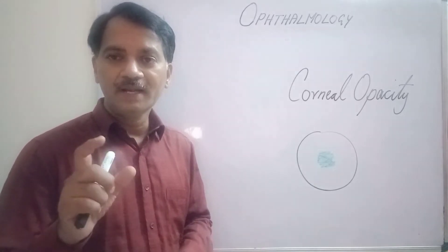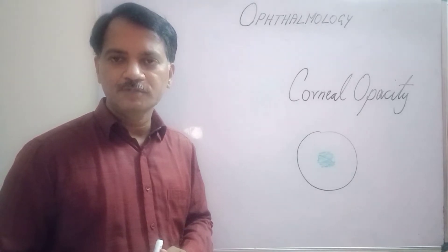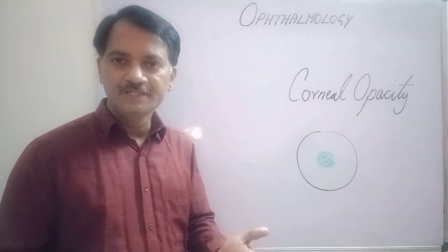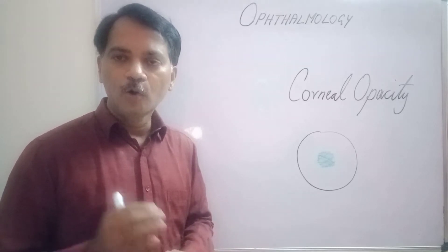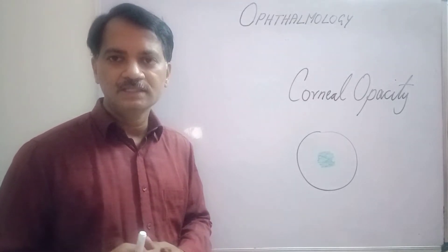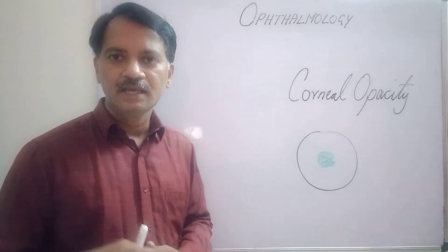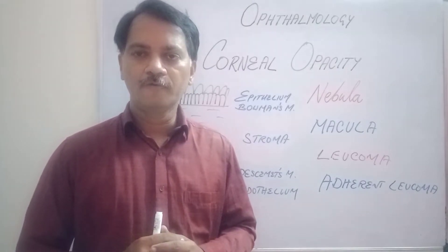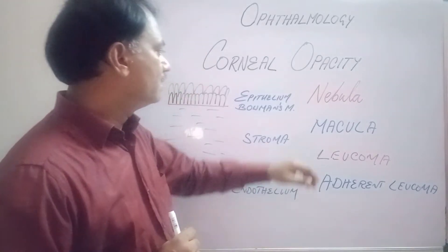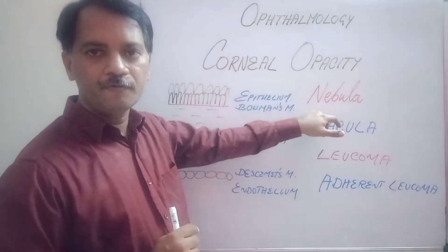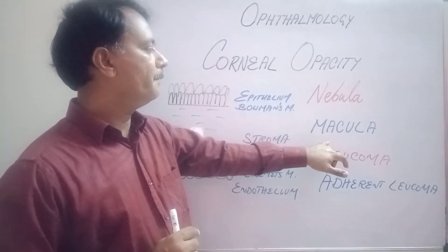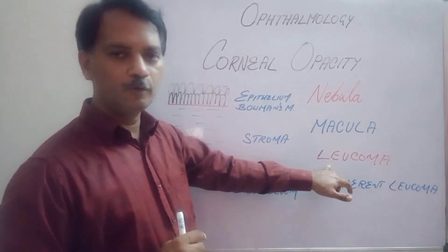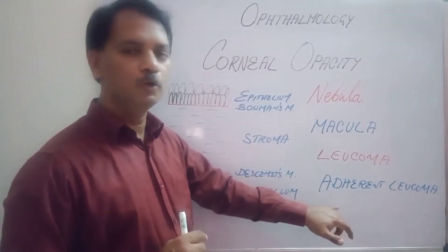Now let us see what are the different types of corneal opacities, how they affect the vision, and how to correct or treat those opacities. Corneal opacities are of four types: nebula type, macula type, leucomatous type, and adherent leucoma.